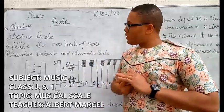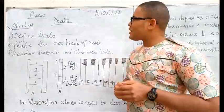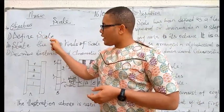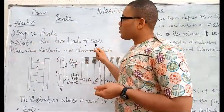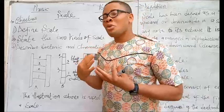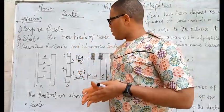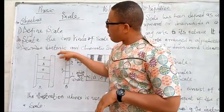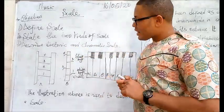At the end of this topic you are expected to know the definition of a scale, state the two kinds of scale, then describe in an elaborate way the meaning of diatonic and chromatic scale.